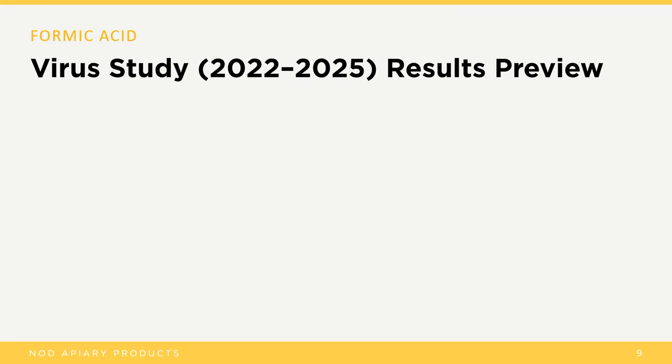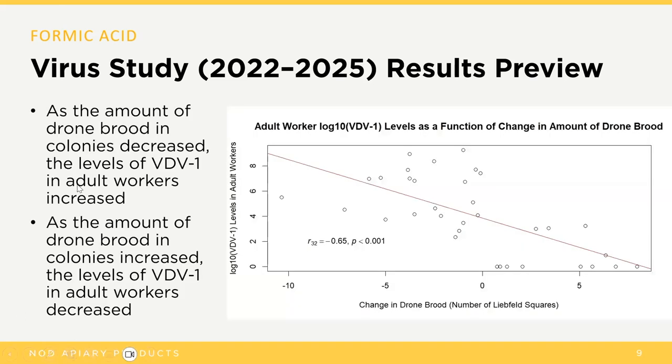So far we just have results from last year, which was a pilot year. This year we've run a full study. Essentially, once a month we go into the field, do hardcore brood sampling, and collect virus samples from drone pupae, worker pupae, drone adults, and worker adults — with and without varroa. We send it off to North Dakota and they do the PCR analysis. So far, what we've found is that as the amount of drone brood decreases, the levels of Varroa destructor virus 1 in adult workers increase.